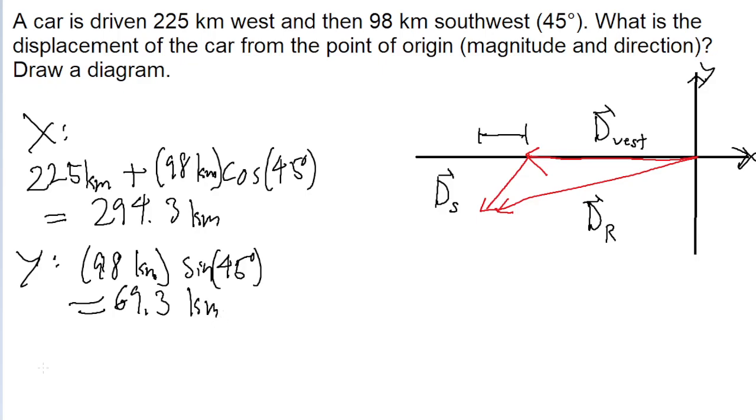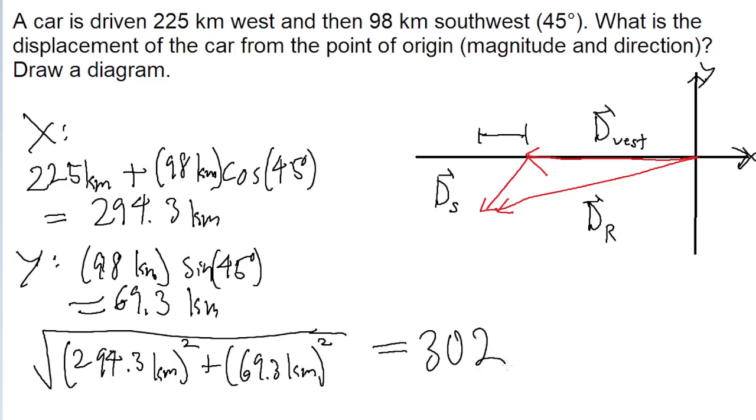So to find the resultant, we just take the square root of the sum of the squares. So 294.3 kilometers squared, plus 69.3 kilometers squared, and the whole thing's under a square root. And this gives us 302 kilometers.